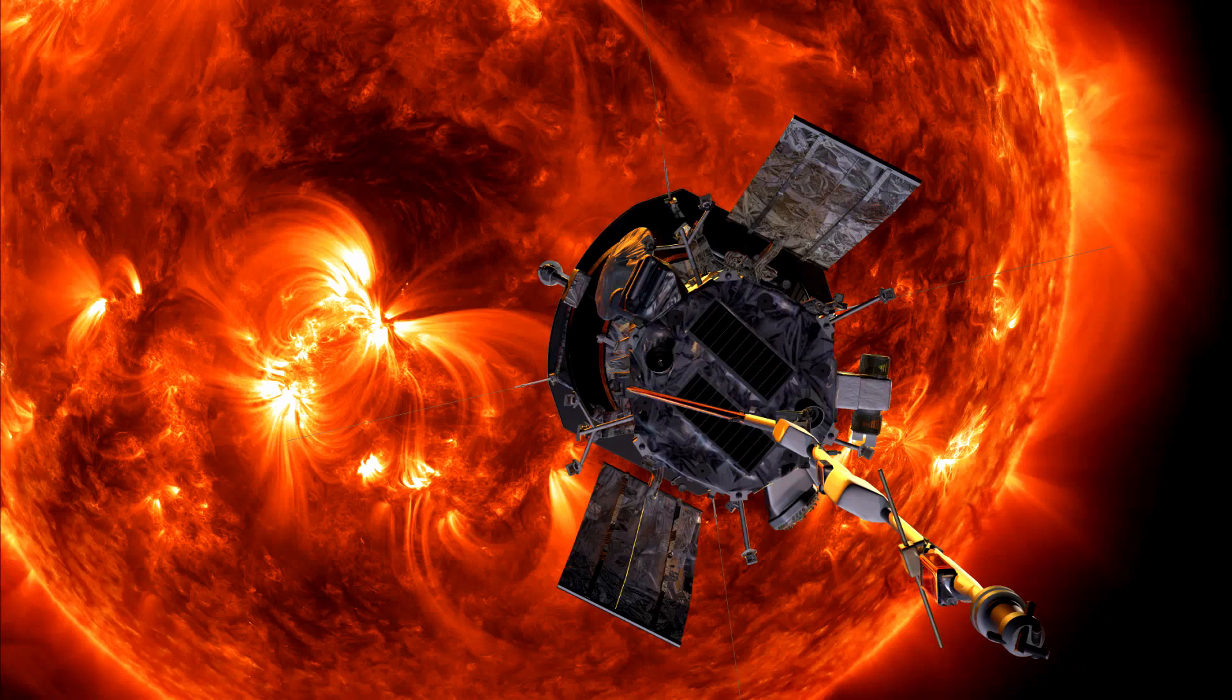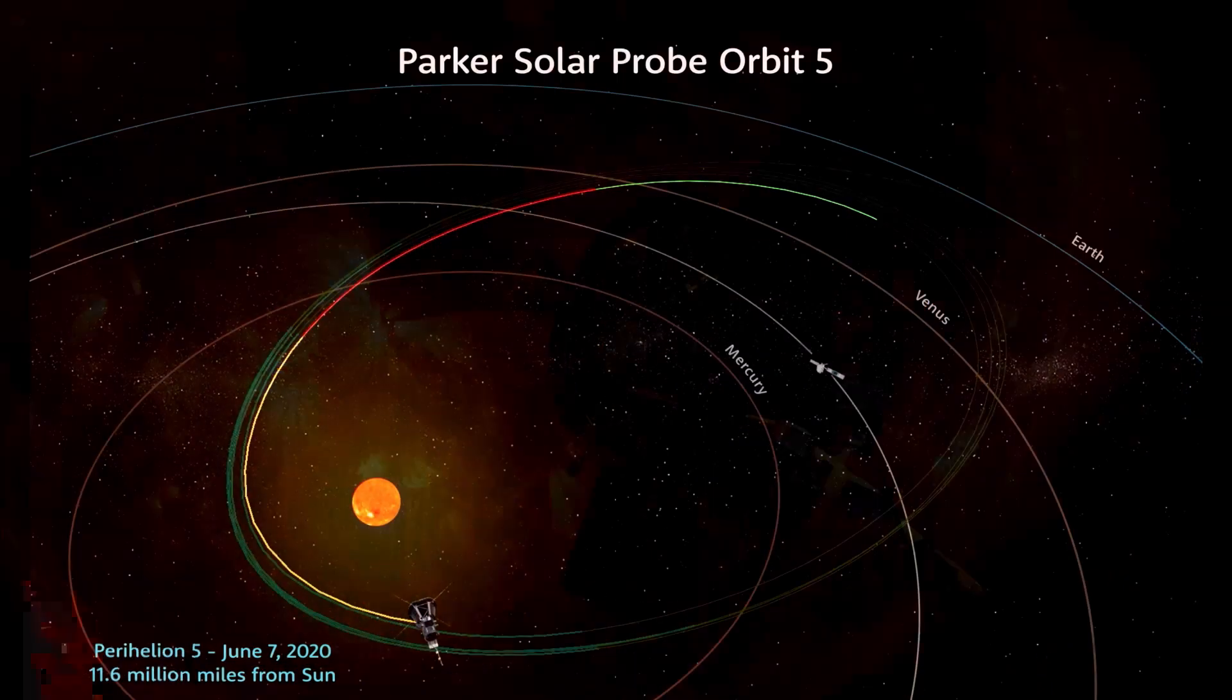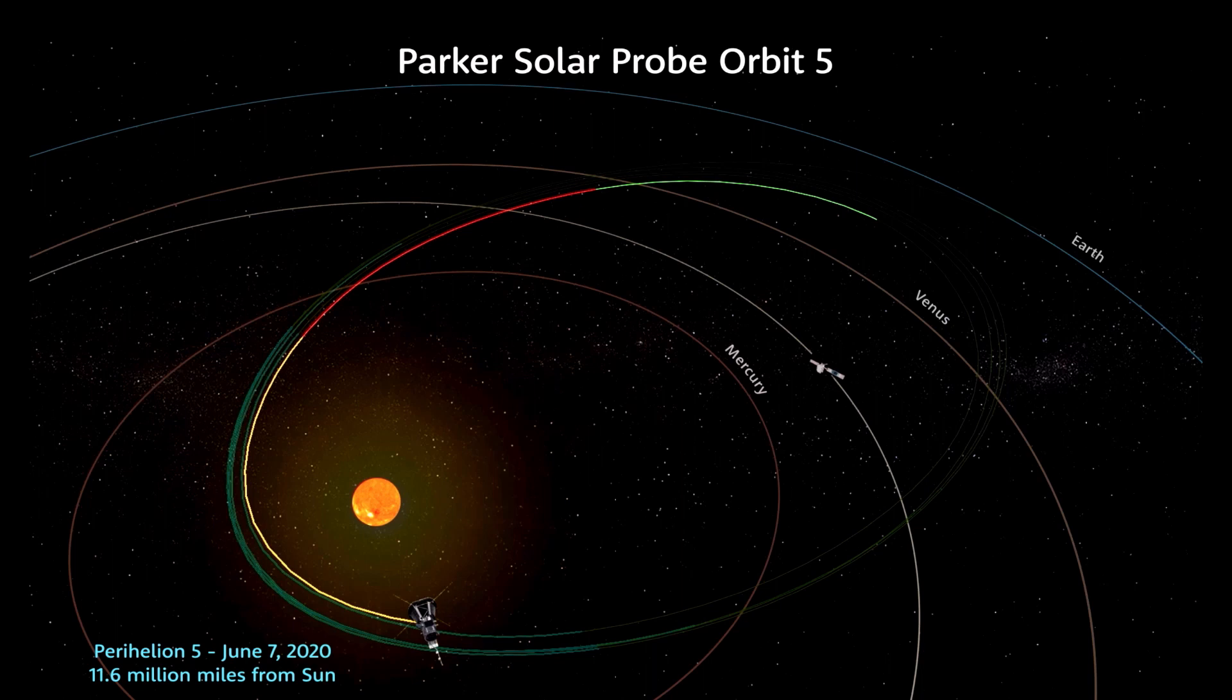The shield is so efficient that even when the probe is close and experiencing 2,600 degrees Celsius on the sunward side, it will still be in the range of room temperature in the shadow of the shield. The Parker Solar Probe is currently the fastest-moving object ever made by humans, reaching a speed in excess of 250,000 miles per hour. Why is this probe important?